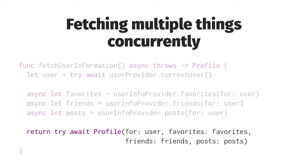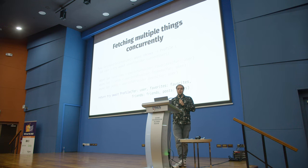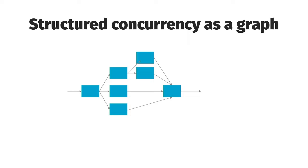We then use try await to wait for all of them when constructing the user profile. What's cool is we don't need three separate awaits — just like how try works for the entire expression, we can use one await for all the things we're awaiting. This shows the fork-join model in action: we have one starting point, we fan out into a bunch of child tasks, and eventually fan back in because all child tasks must complete before the parent task can continue.